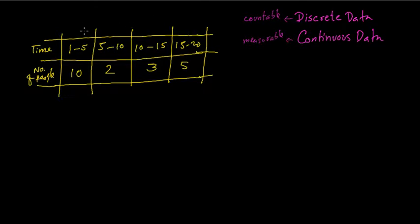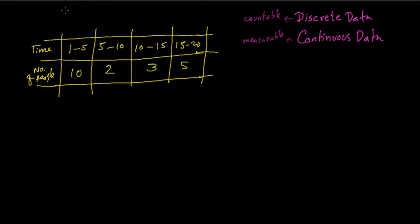This data is continuous — it is flowing, there is no gap, and it is continuous data. Time is continuous; it cannot be counted, it needs to be measured. Some common examples of continuous data are area, volume, distance, time, money, height, and weight.